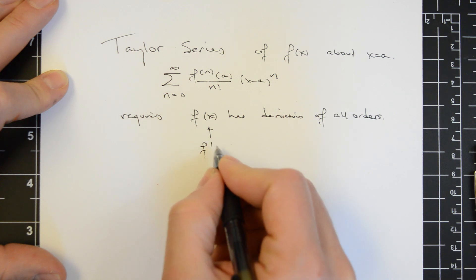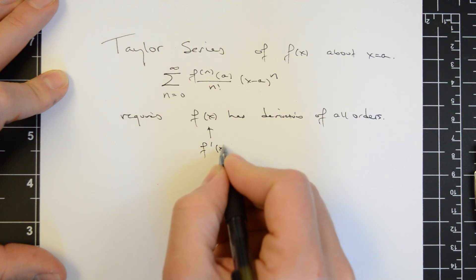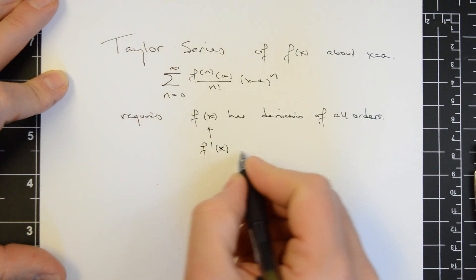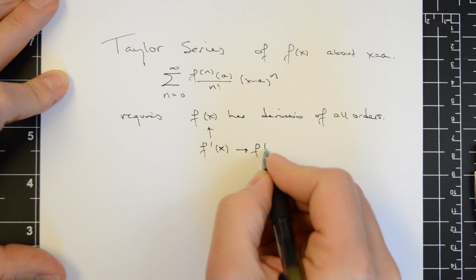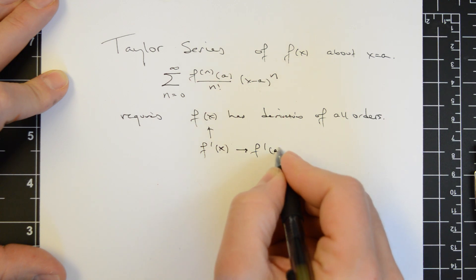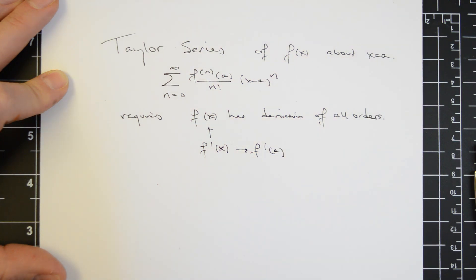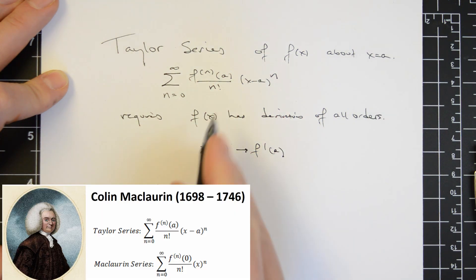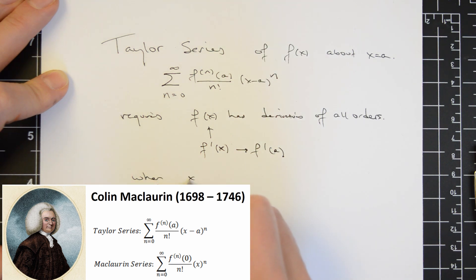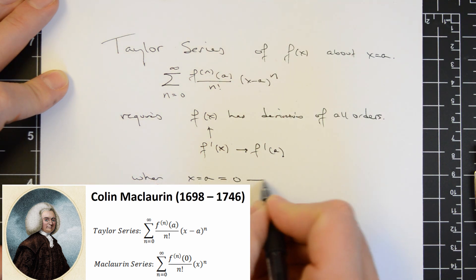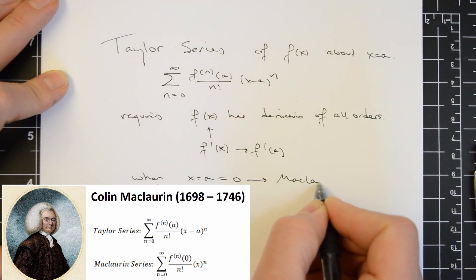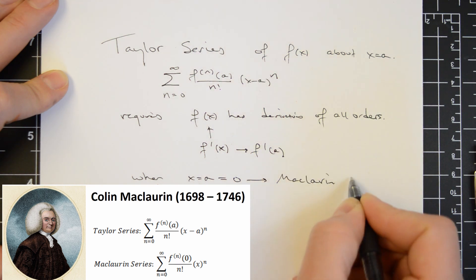For example, we must be able to compute f prime, and then we'll evaluate f prime at a. Often, a is 0. When x equals a, the center point of the expansion is 0, we call this a Maclaurin series.